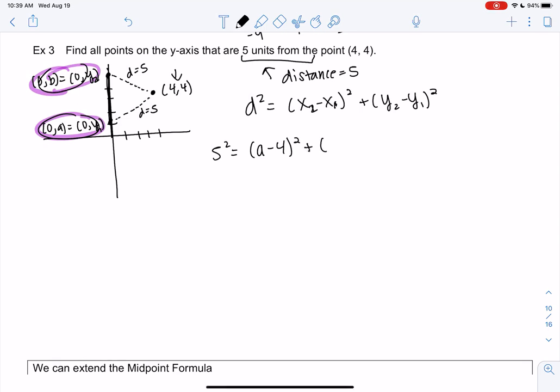Plus, oops, a was the y value. (0 - 4)² that's my x, and then (a - 4) for y. Okay, so we get 25 = 16 + (a - 4)². Same thing for the other one, but let's solve this one first.